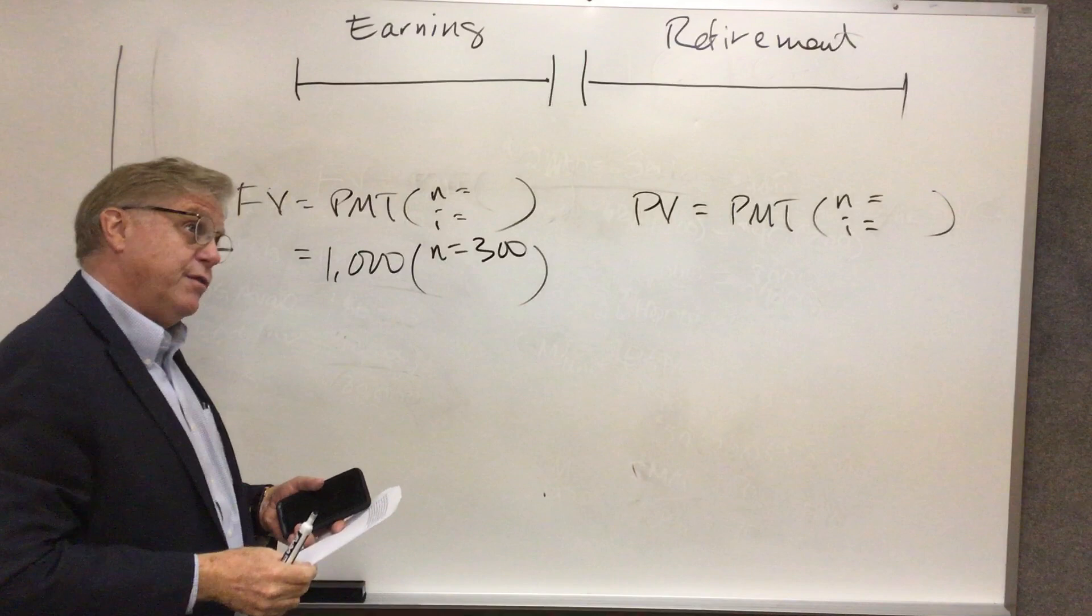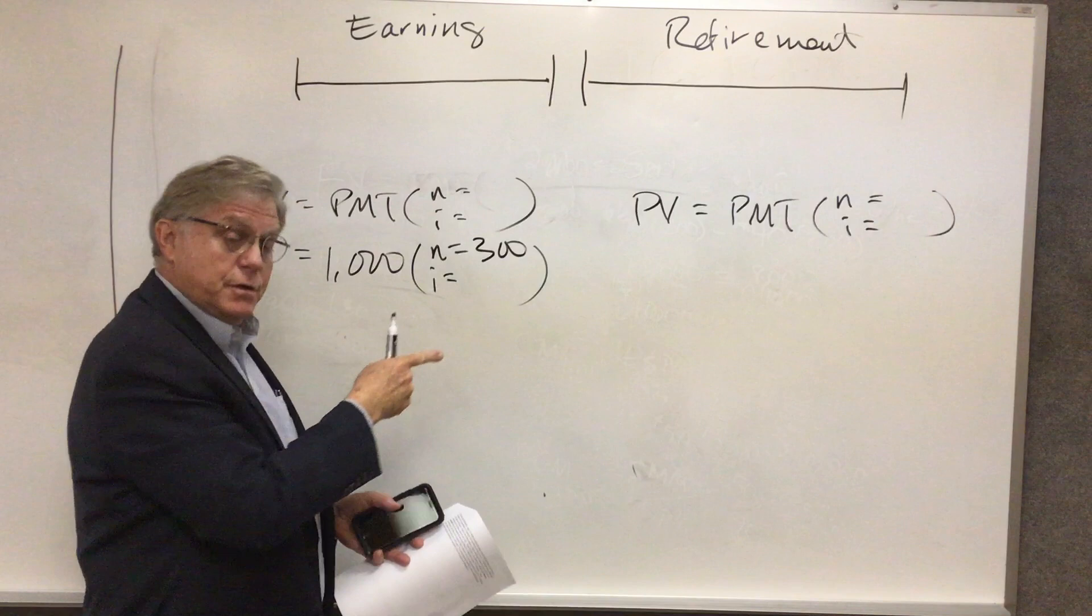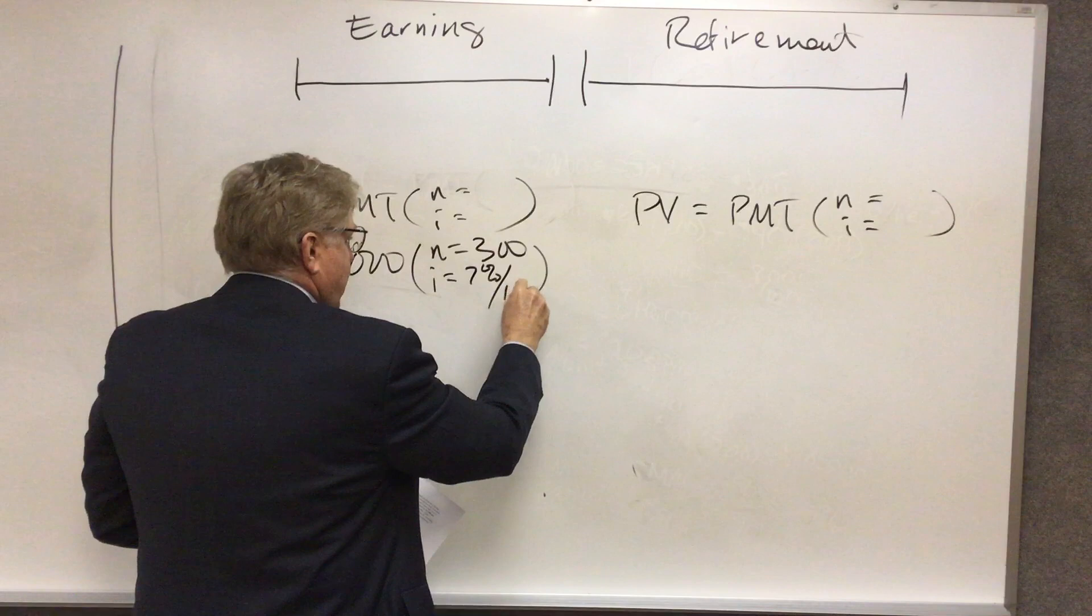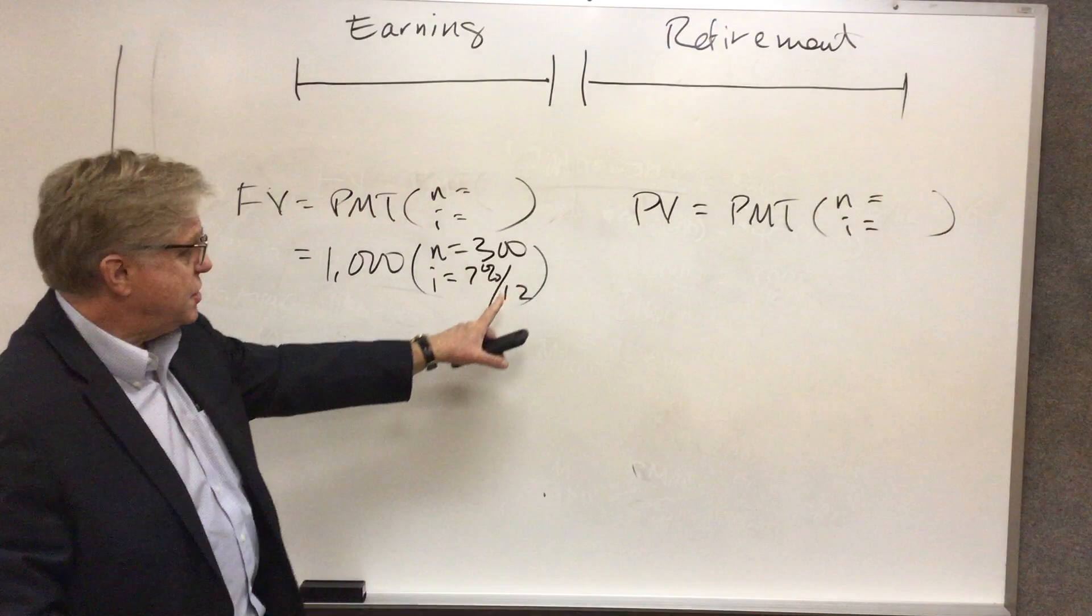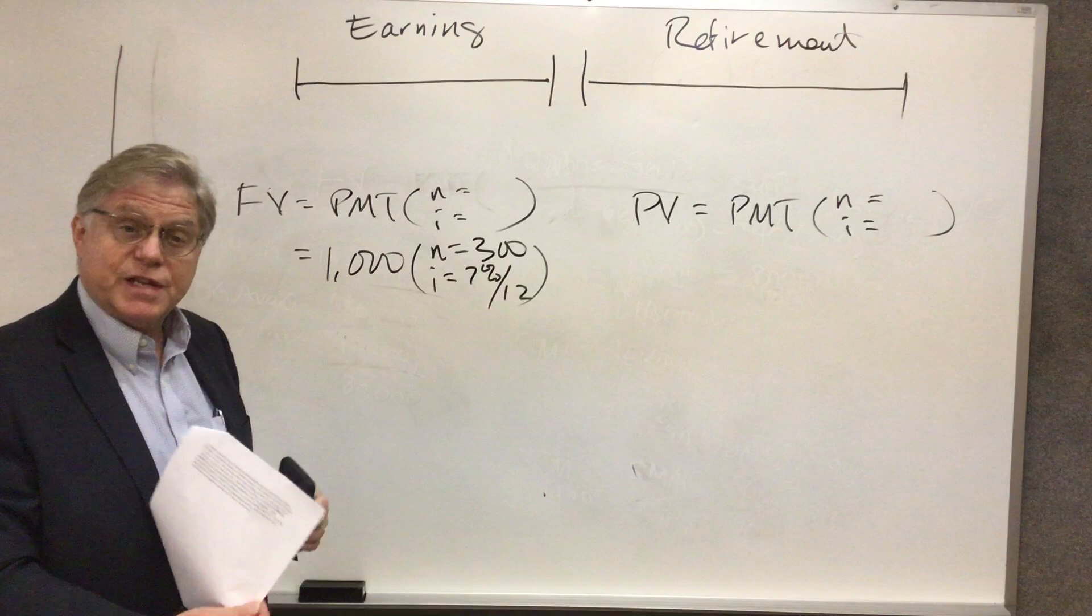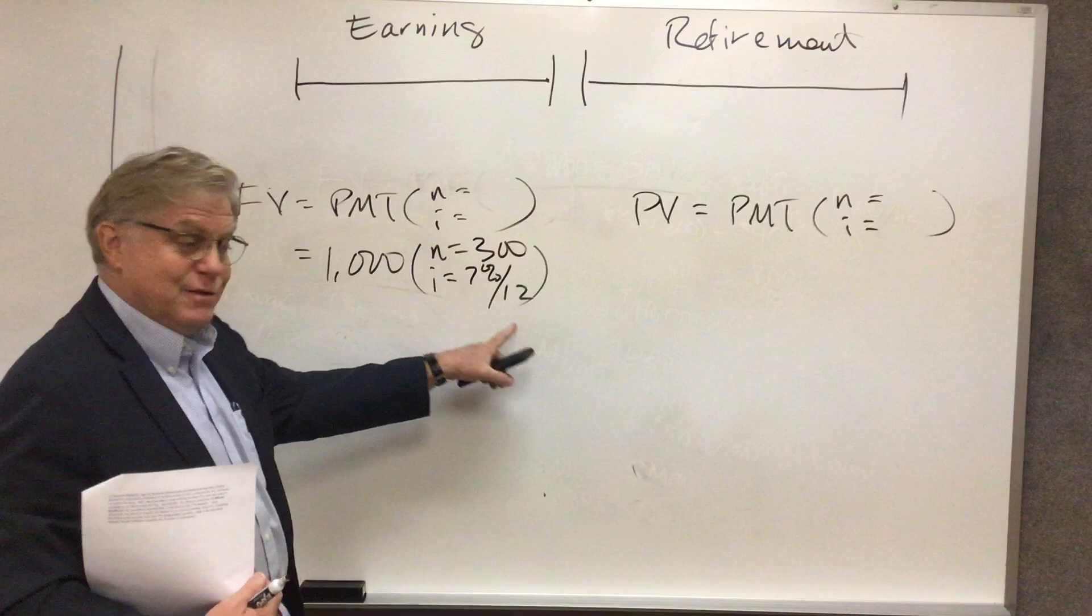The rate of return that she expects to earn during the earning years is 7%. So I like to represent that just like this: $1,000 per month for 300 months, and the rate of return her account will earn is 7% divided by 12. See, it's 7% compounded monthly. That's not 7% per month. That's 7% divided by 12, or multiplied by 1/12.